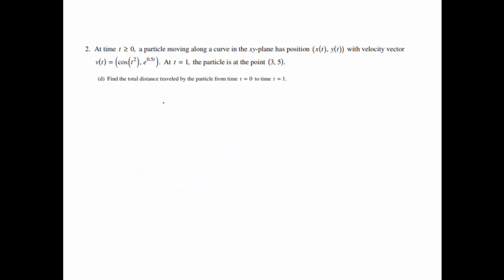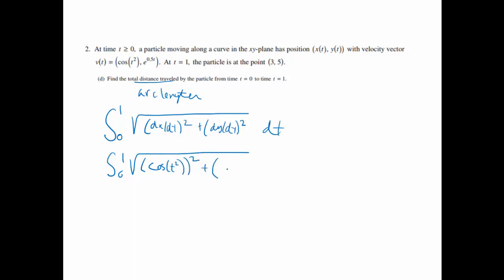Okay, part d, find the total distance traveled by the particle from t equals 0 to t equals 1. Total distance traveled is going to be the same as arc length in parametric. And the arc length is the integral, and this one will be from 0 to 1, of the square root of (dx/dt) squared plus (dy/dt) squared. So you'll notice that this one is actually the speed formula. We're just taking the integral of the speed formula. So from here, we'll do the integral from 0 to 1. dx/dt is cosine t squared squared plus e to the 0.5t squared.